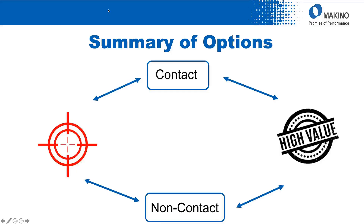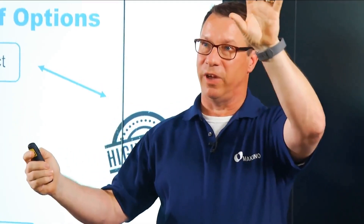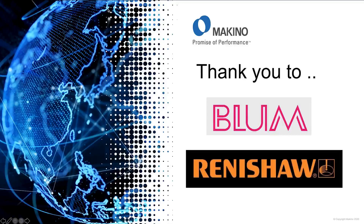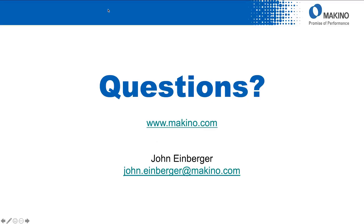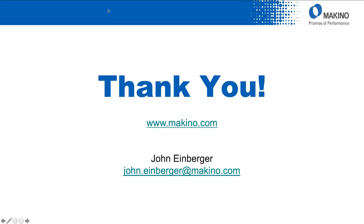As a summary: high precision versus high value, a lot of data versus a limited data stream, contact style being probably the lowest cost versus non-contact which may have higher capital cost depending on how the machine tool builder packages the system. But again, a whole array of options and a whole array of costs and benefits. I'd like to extend a thank you to our partners at both Blum and Renishaw, who made available to us some very good supporting imagery for this presentation. And at this point, let's open it up to questions — we'll take a look at the chat and address them on a question-by-question basis.